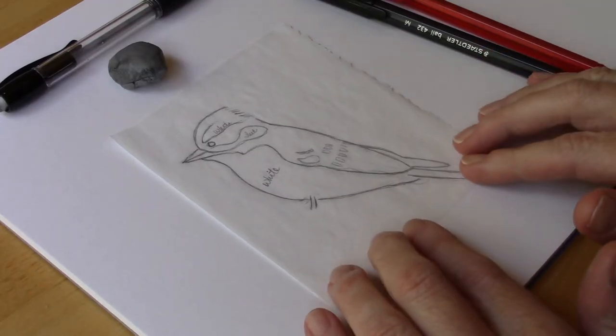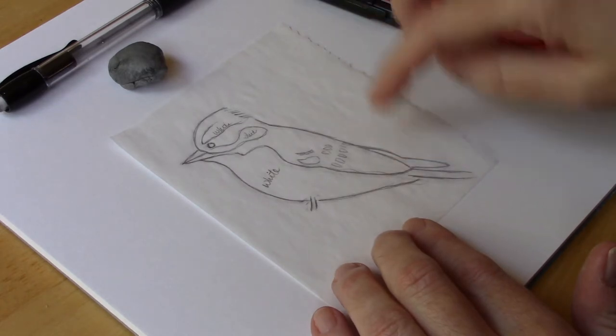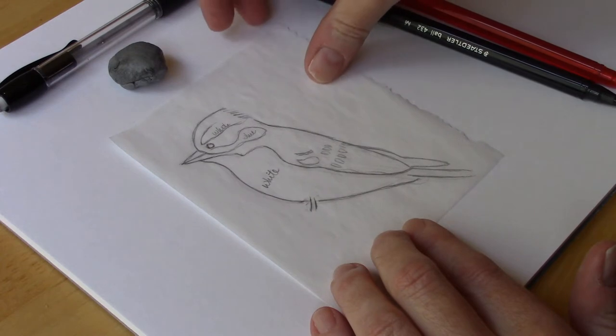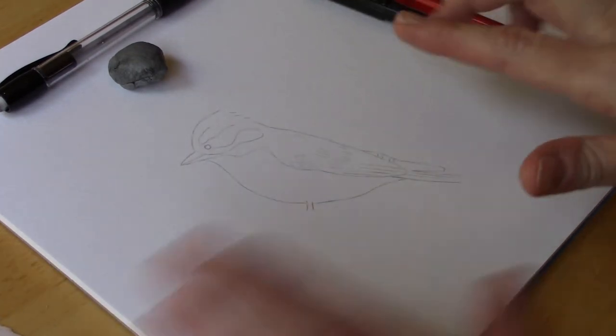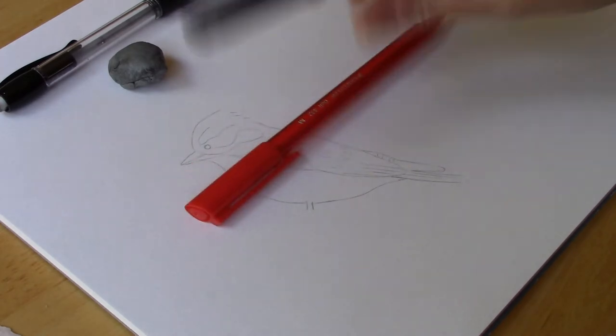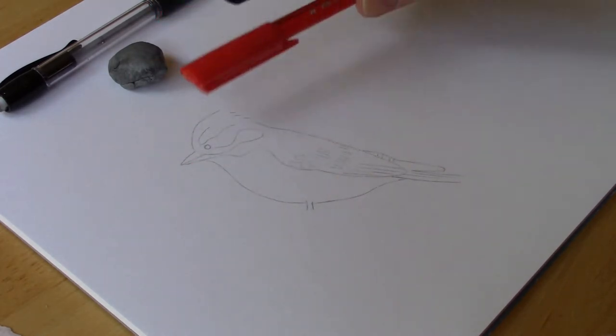I've sketched out a little downy woodpecker and I've transferred it to my drawing paper, and then I'm going to be using my black and my red ballpoint pens.